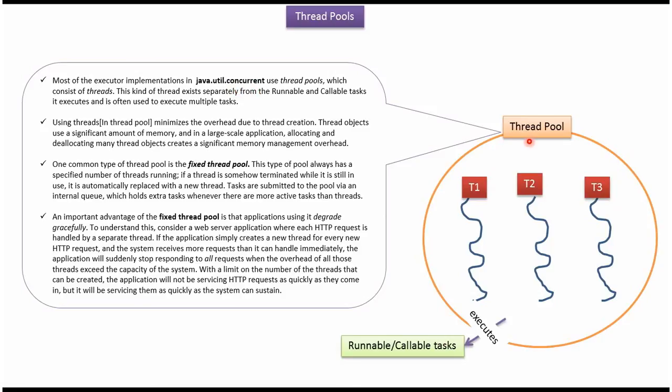One common type of ThreadPool is Fixed ThreadPool. In Fixed ThreadPool, we can specify how many number of threads should be present in ThreadPool. Suppose if we specify ThreadPool size is 3, then 3 threads will be present in ThreadPool. Suppose if we specify ThreadPool size is 5, then 5 threads will be present in ThreadPool. And that fixed number of threads will be used to execute multiple tasks.